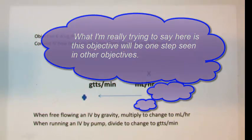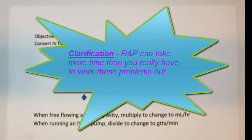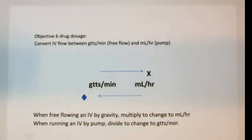Though working Objective 6 and 7 problems can be accomplished by ratio and proportion, you may find that this causes too much time in your more difficult problems. For this reason, I would like to spend a second talking about an easy way to do these conversions because they will simply be a step in other processes.